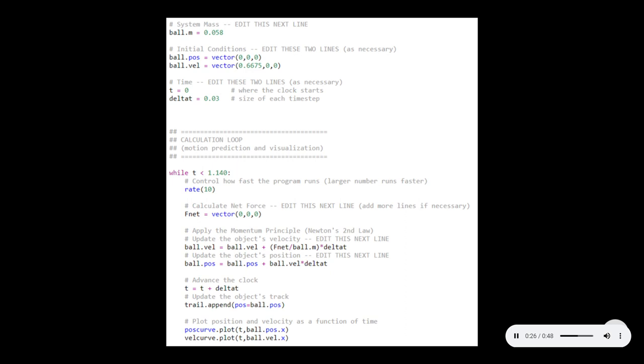Next, I made sure that time was less than 1.14, as that was the max of my video, and continued to change the ball velocity and ball position to follow the velocity update and position update formula. Additionally, I also updated delta T to 0.03 seconds, as those are the increments of my video.